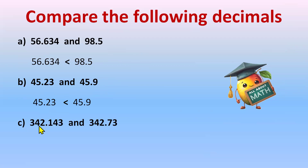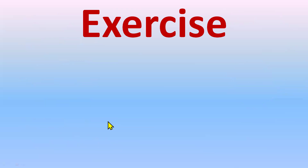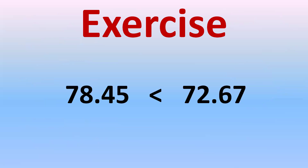Part C: 342.143 versus 342.73. Whole part is again the same, so move to the tenth place: one versus seven — seven is greater, so 342.73 is greater than 342.143. We just checked the tenth place and got our answer. Now it's your turn — we have the question: is 78.45 greater than 72.67?